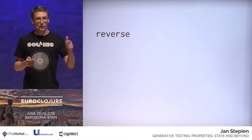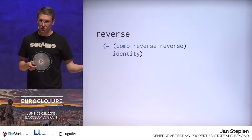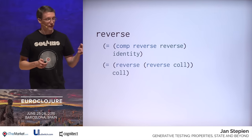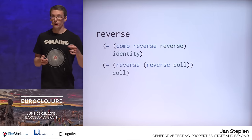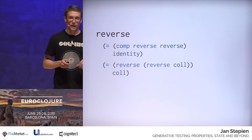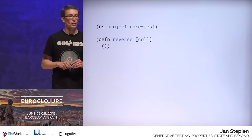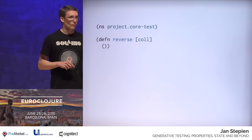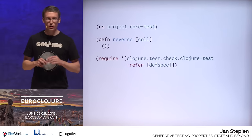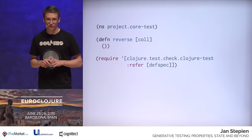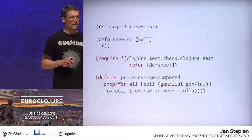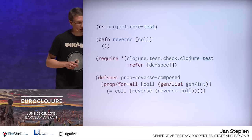For certain sequences, like lists or vectors, reversing a reversed collection is the same collection. It would be excellent if we could just test it that way, but there are reasons for which this does not work. Instead, we can write: for arbitrary collection, reverse of reverse of a collection is equal to the original collection. I'm going to write a proper Clojure test namespace to test this behaviour. Let's create the project core test namespace and assume the following partially correct implementation of reverse. We will need the `defspec` macro, which corresponds to a Clojure test `deftest` macro.